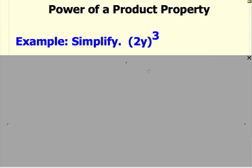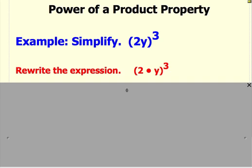In this first example, we have to simplify (2y) raised to the power of 3. We can rewrite the problem like this, so it's more obvious that we have a product here.